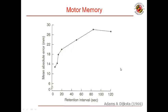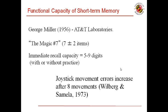Having some idea about the duration of memory, we'll now talk about capacity — as in how much information we can accommodate. This idea was first explored by George Miller in a famous paper titled Magic No. 7. The paper showed evidence that we have the capacity to hold 7 plus or minus 2 items. This idea relating to the quantification of memory capacity was reinforced by various researchers. Wilberg and Samela showed that joystick movement errors increase after 8 movements.